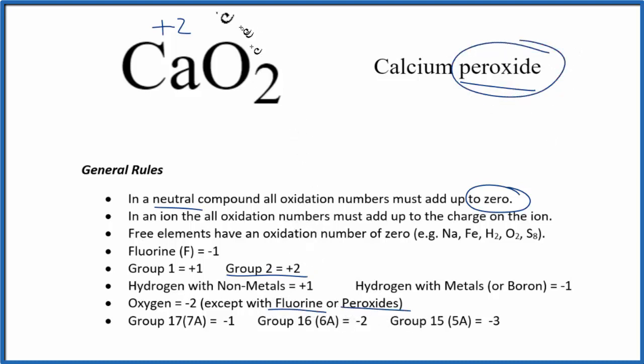So let's figure out the oxidation number on oxygen using this information that calcium is plus 2 and everything has to add up to zero. Let's just call oxygen X. So we have plus 2 for the calcium, we only have one of those, plus we have two oxygens, and each oxygen we don't know what it is, we'll just call it X.